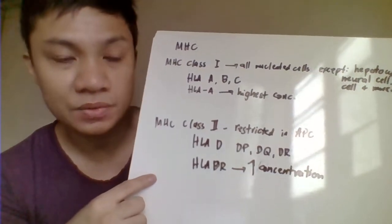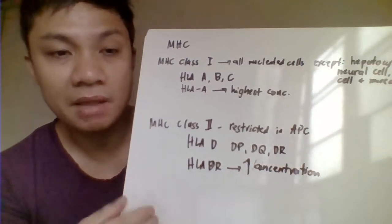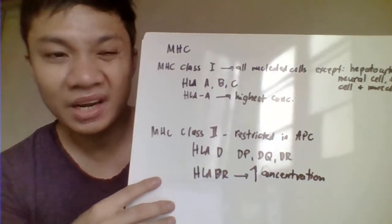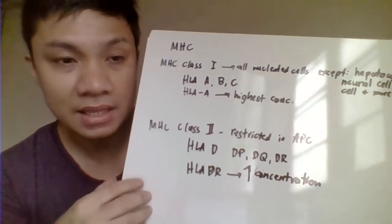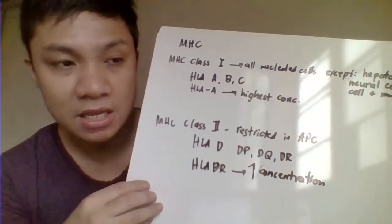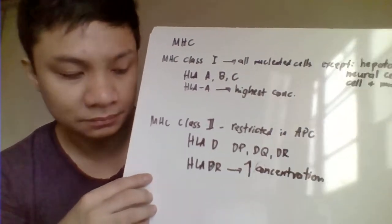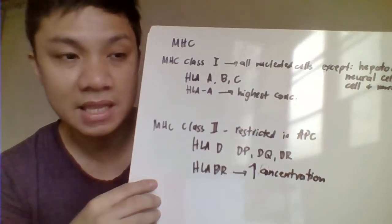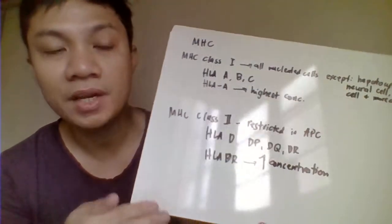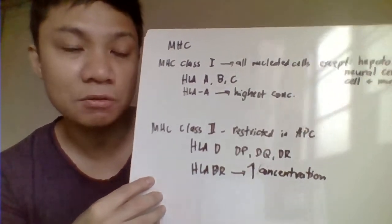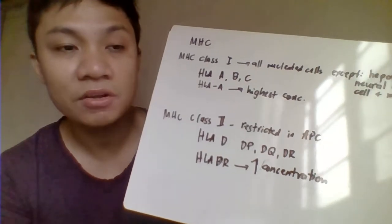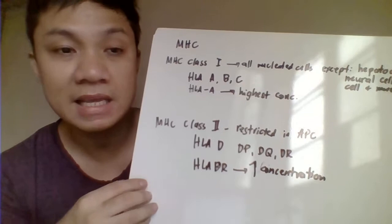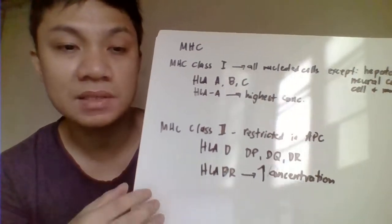MHC class 2 is confined to all antigen-presenting cells in the body. HLA for MHC class 2 includes HLA-DP, HLA-DQ, and HLA-DR. The highest concentration is expressed by HLA-DR. For compatibility between the donor and recipient, the donor and recipient should be matched for HLA-DR, because it is highly immunogenic compared to other MHC class 2 antigens.